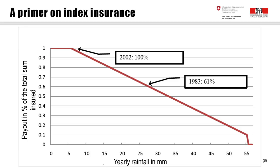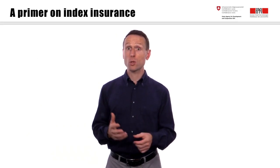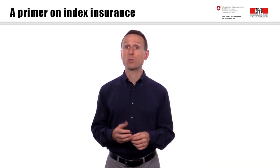This index approach comes with huge advantages: adverse selection and moral hazard are effectively eliminated, and the insurer doesn't have to send loss adjusters out to the field after an event, thus speeding up claims administration dramatically. The disadvantages and limitations are also quite important. First, you have to find a really good correlation between the index — rainfall, quake intensity, etc. — and the losses observed. Otherwise, clients can't rely on this type of insurance and will consider it a lottery rather than effective risk transfer. Second, you are in trouble if not all clients experience the same level of destruction or loss. This imperfect correlation between the index and the individual's loss is known as basis risk.